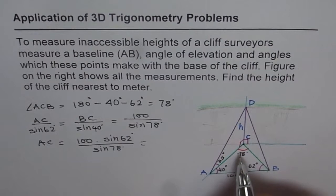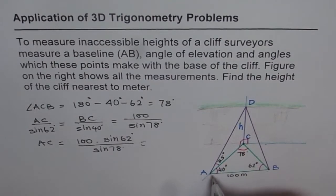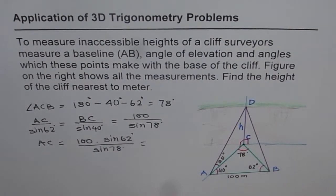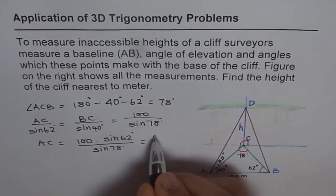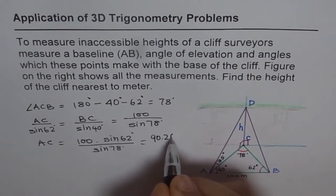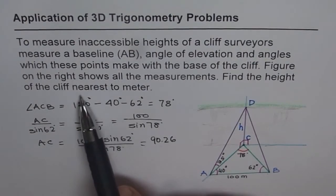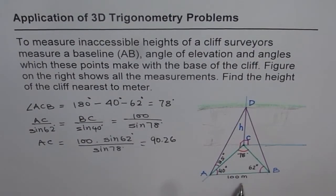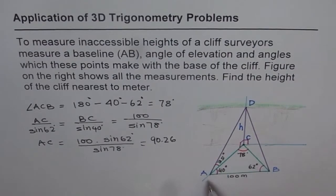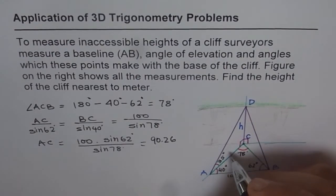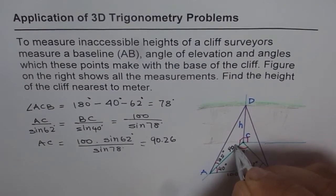So we get AC equals to 100 times sine of 62 divided by sine of 78. So that gives us the side AC. Let's calculate this answer, which is 100 times sine of 62 divided by sine of 78, which is equal to 90.26. So at present, we'll keep it 2 decimal. We'll round it at the end to the nearest meter. All dimensions are in meters. So we know AC. So AC is 90.2, let me write 90 here, 90 meters.